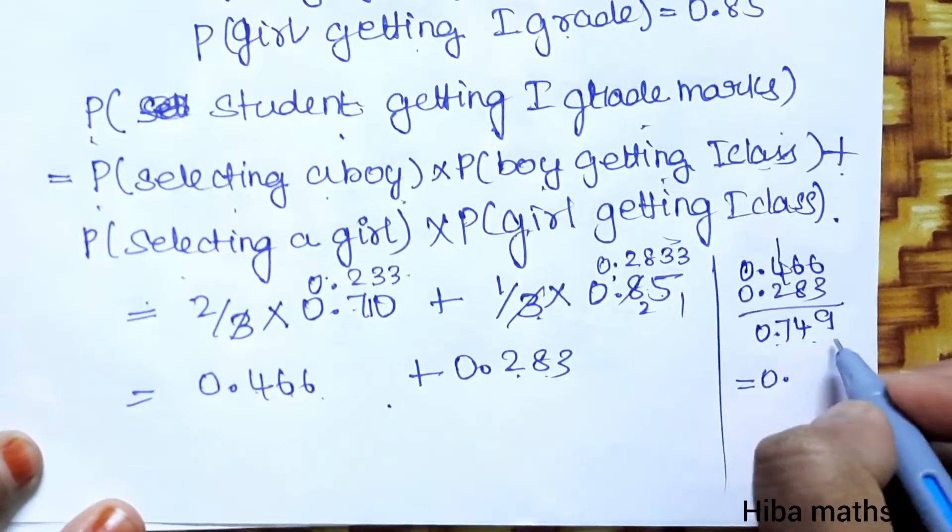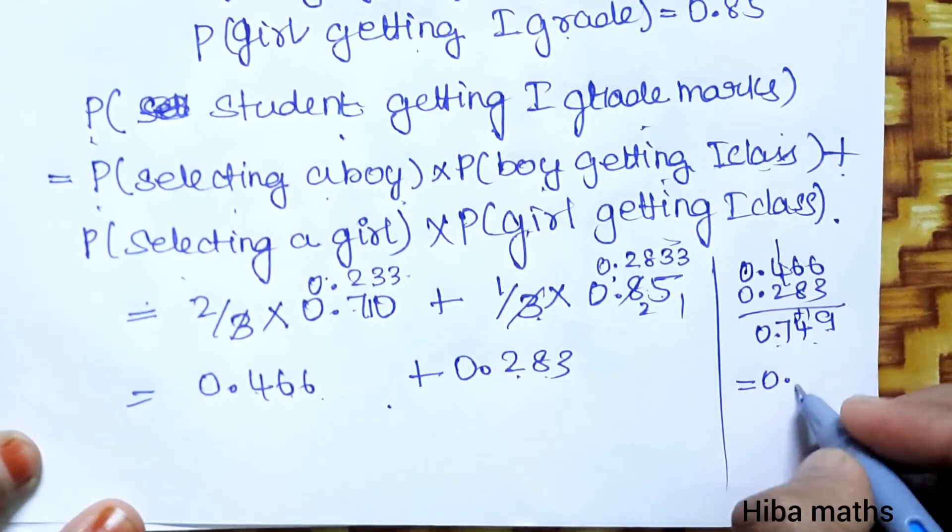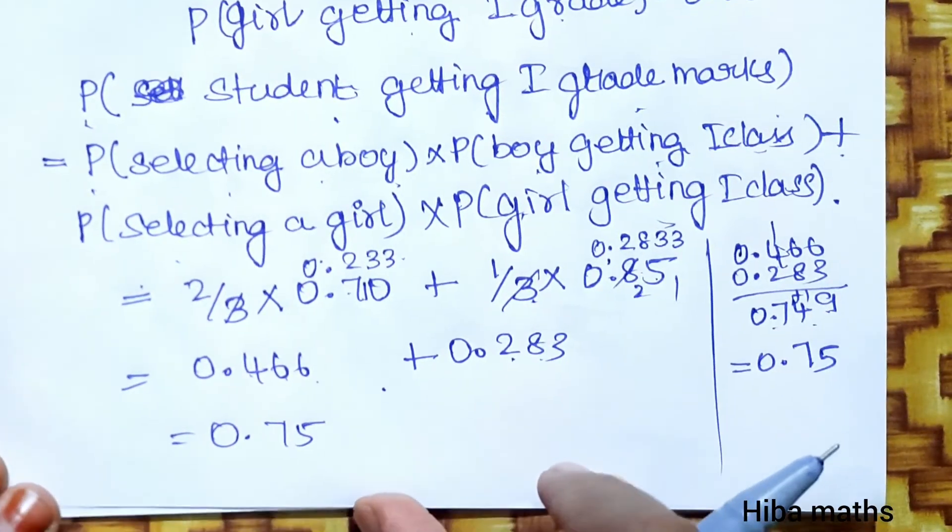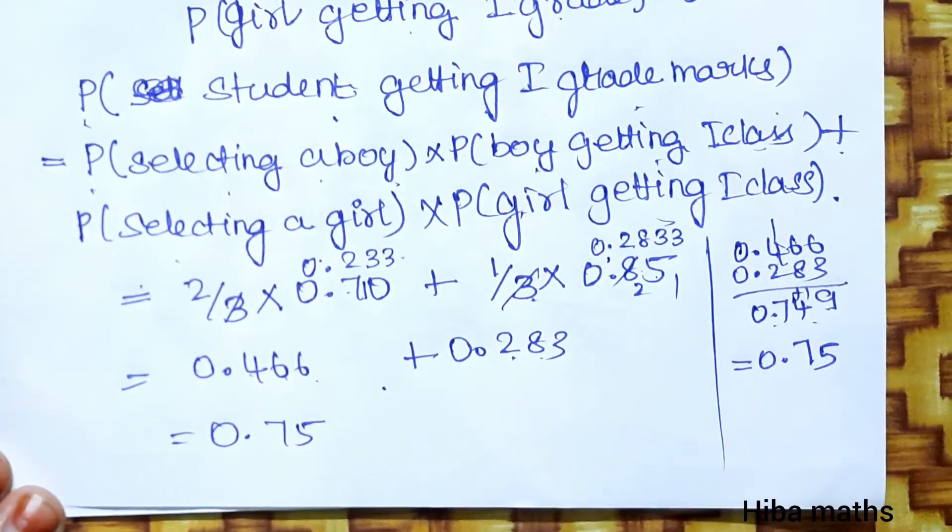Rounding to two decimal places, the answer is 0.75. Thank you so much for watching.